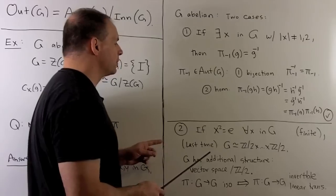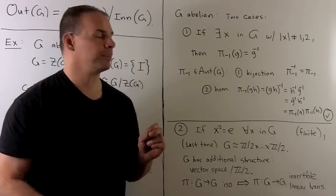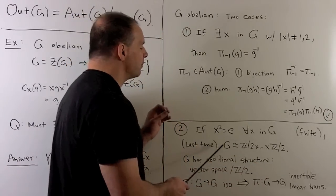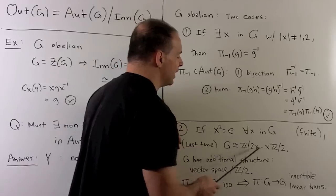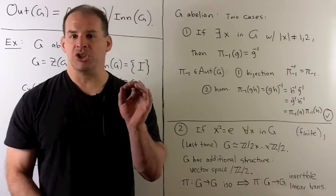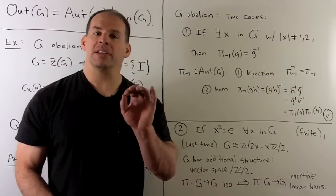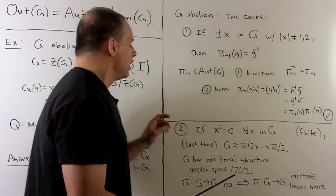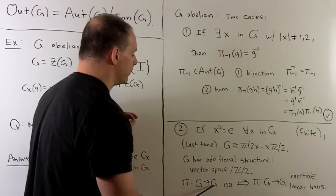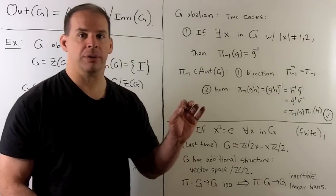For the second case, assuming our groups are finite with every element of order at most 2: we noted last time that G is isomorphic to a product of Z2s. With this structure, G is actually a vector space over Z mod 2. An isomorphism from G back to itself corresponds to an invertible linear transformation, moving us into linear algebra.